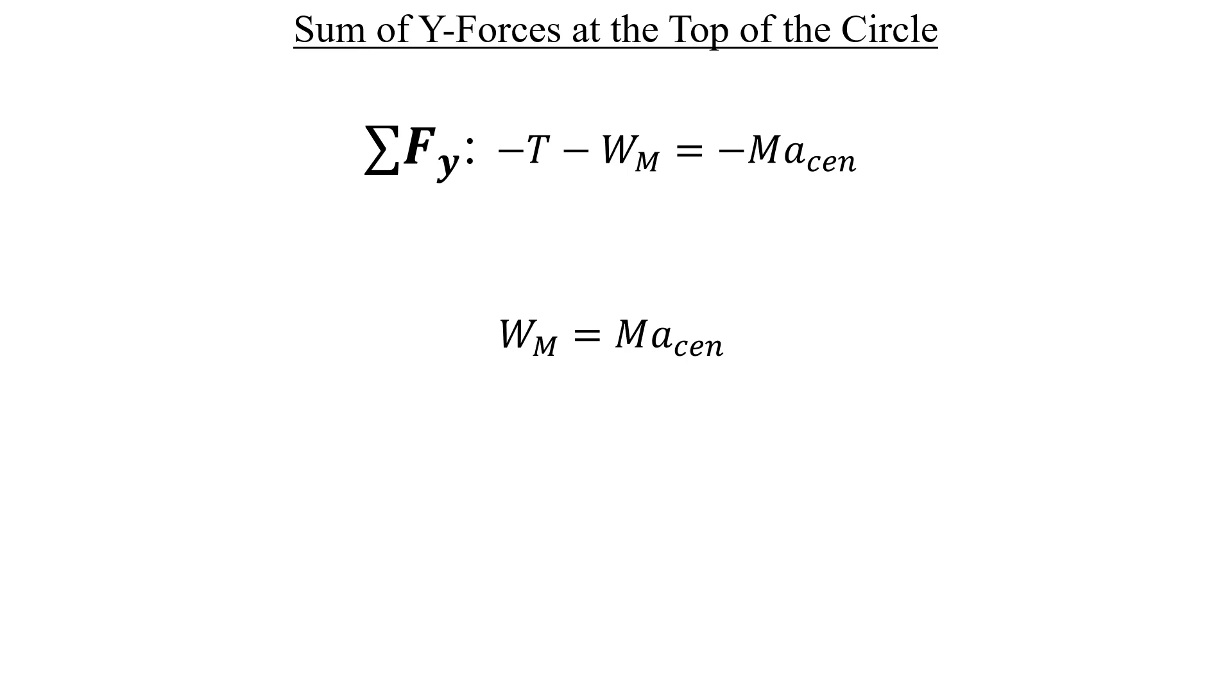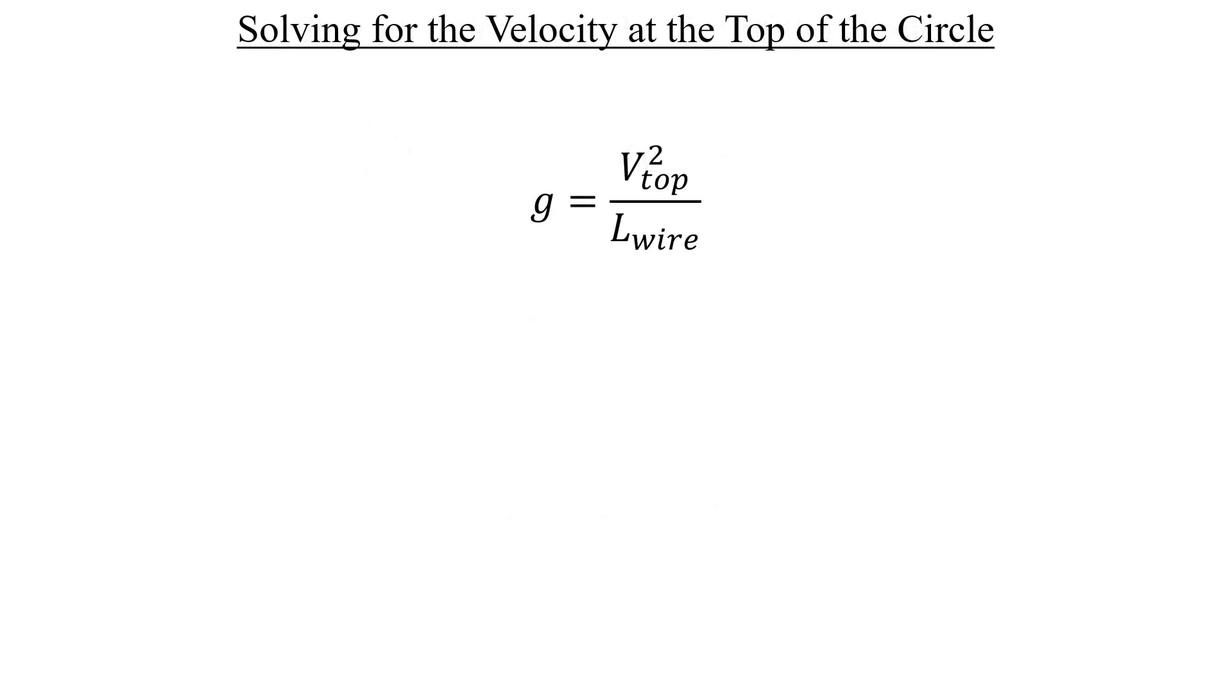Let's insert the definitions on both sides and then solve for the square of the velocity in the top position, this variable here. The combined mass of both objects, which I'm calling capital M, hangs out on both sides, so we can just divide that out and get rid of it. Let's multiply both sides by the length of the wire. And that's really all that's needed here. Instead of taking the square root of both sides like we normally would, we're actually going to keep it like this and use the squared portion here shortly.